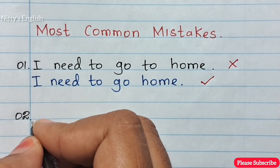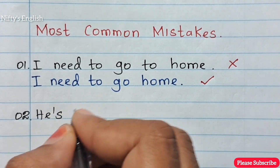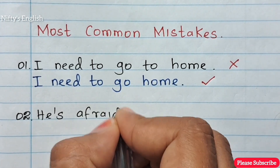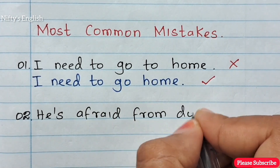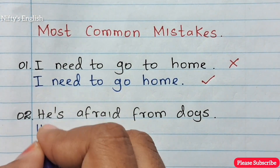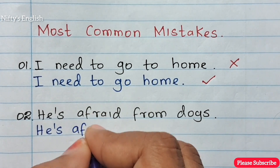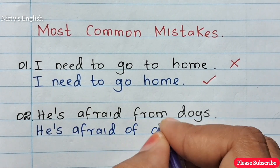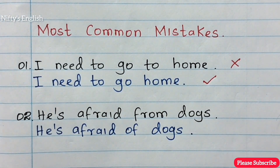Number two: 'He's afraid from dogs' is the wrong sentence. 'He's afraid of dogs' is the right sentence.